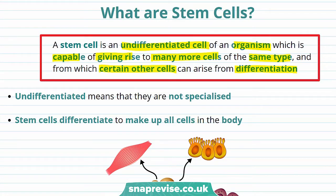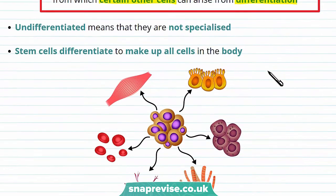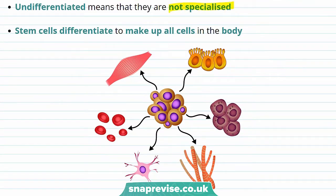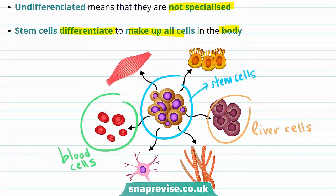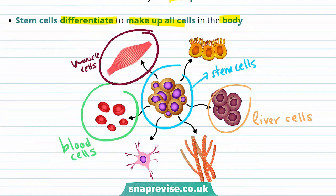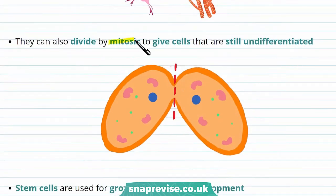Let's start with being undifferentiated. Undifferentiated means they are not specialised. Stem cells differentiate to make up all the cells in the body. For example, in this diagram you can see that the stem cells turn into lots of other different cells, and these include liver cells, blood cells, and muscle cells, as well as lots of other different types of cells in the body. Stem cells can also divide by mitosis to give cells that are still undifferentiated, and these cells can still differentiate to produce all the cells in your body.